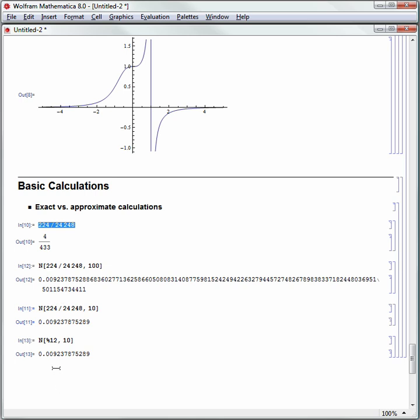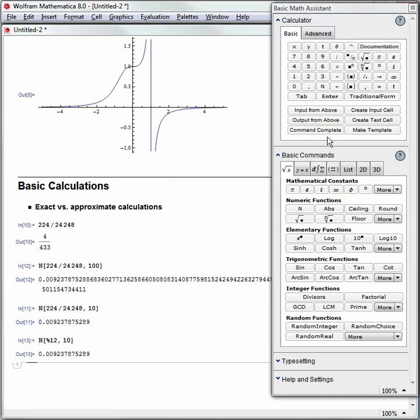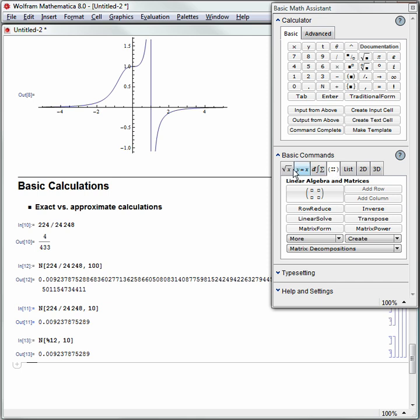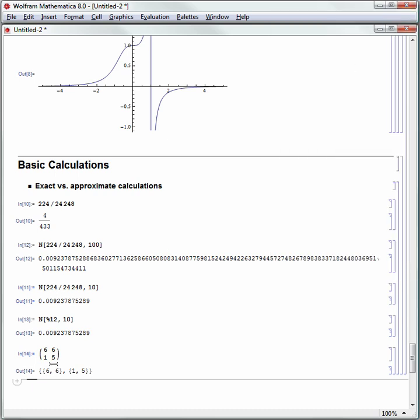Now we can also, let's go ahead and use that palette again. Let's make a matrix using this fourth tab. We'll just make a simple two by two matrix. Let's fill it in with six tab, six tab one tab five. Hit shift enter. Now you'll notice every matrix or data set in Mathematica is just a list of lists. That's how Mathematica internally represents this matrix.